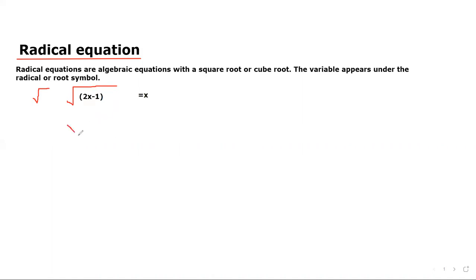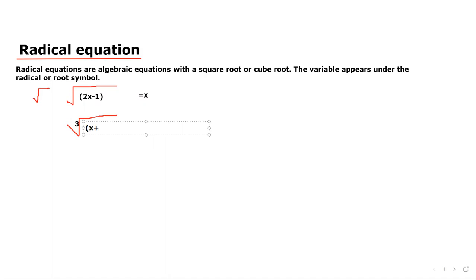Or suppose cube root — cube root means there will be a 3 inside the root. This is the cube root. That is, cube root of x plus 3 equals x minus 3. This one is also a radical equation.